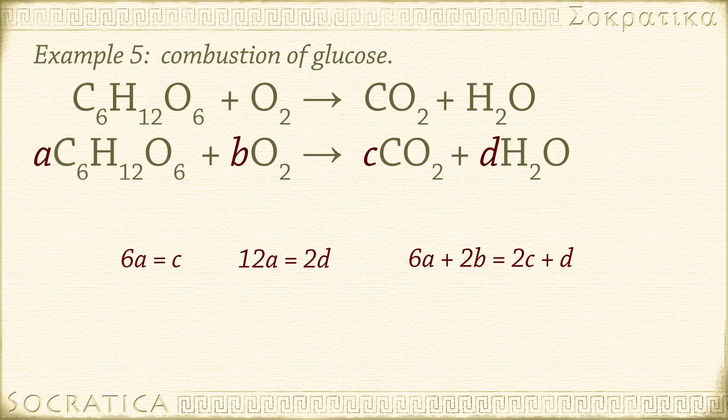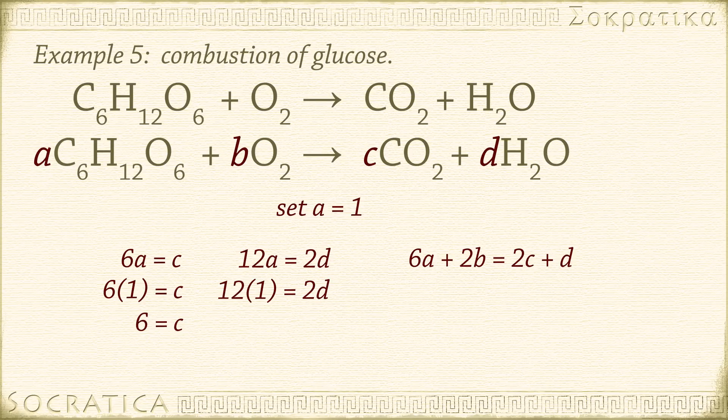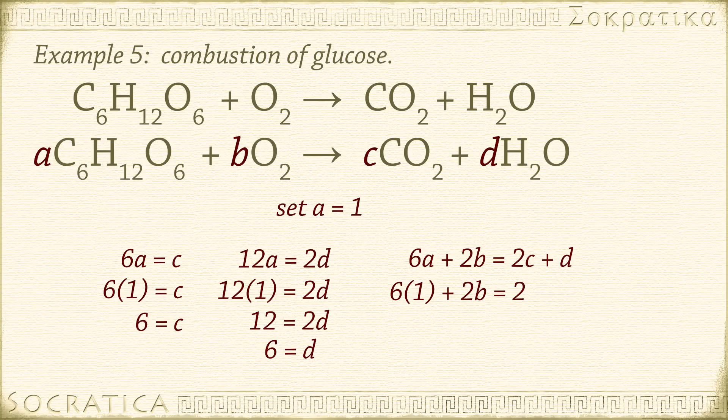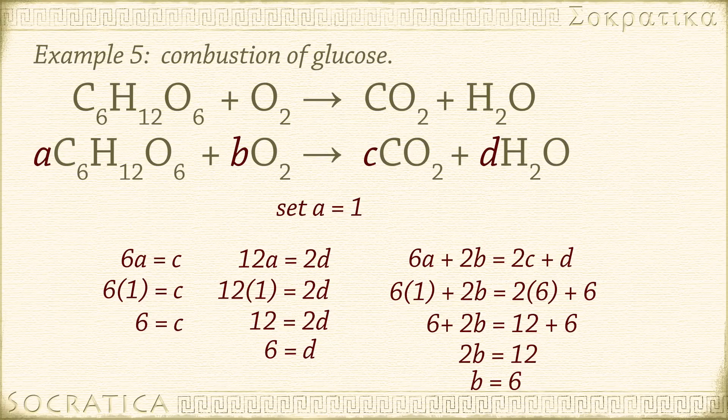Now, pick one of these to set to 1. Let's say we start with one molecule of glucose, C6H12O6, so A equals 1. In the first equation, 6 times 1 equals C. 6 equals C. In the second equation, we then have 12 times 1 equals 2D. 12 equals 2D. D equals 6. Plug what we know into the third equation. 6 times 1 plus 2B equals 2 times 6 plus 6. Solve for B. 6 plus 2B equals 12 plus 6. 2B equals 12. B equals 6.